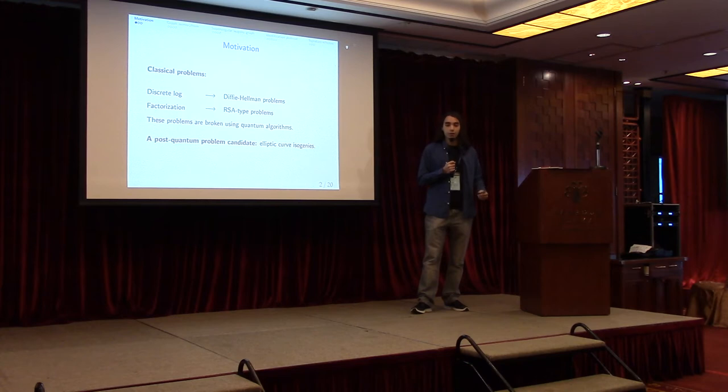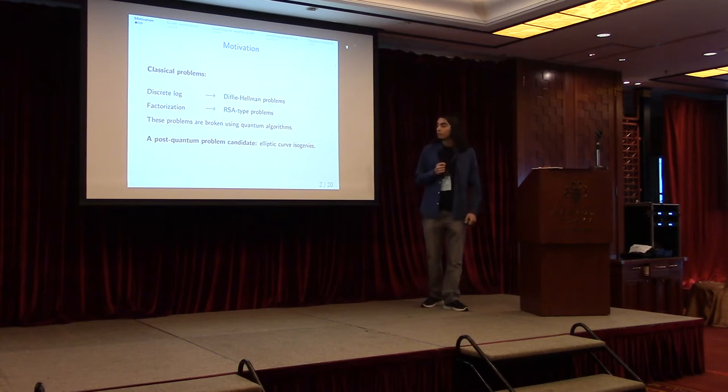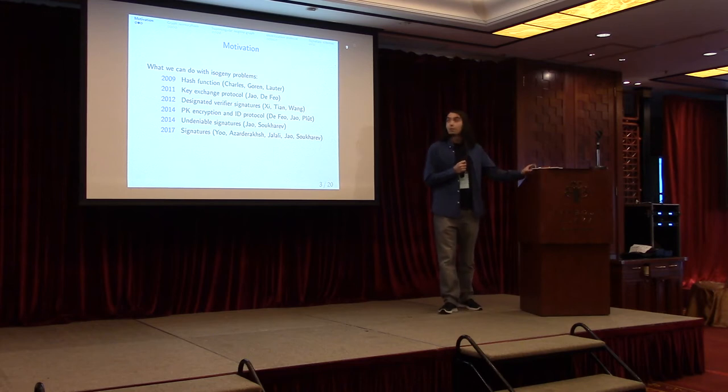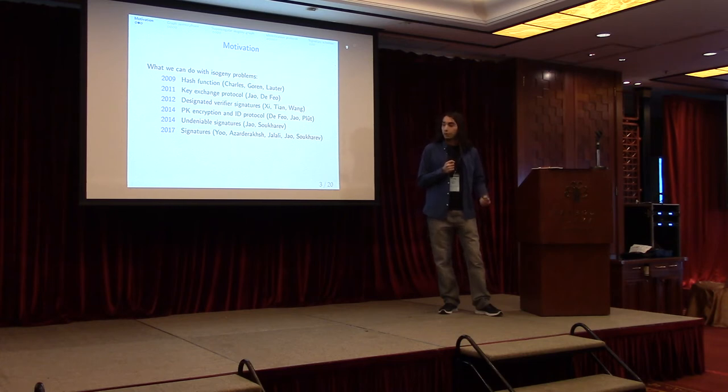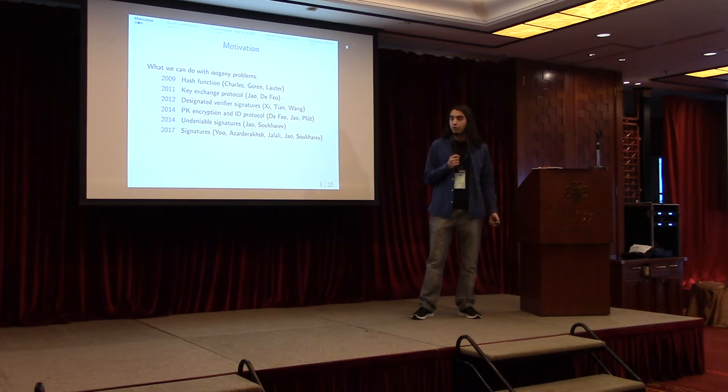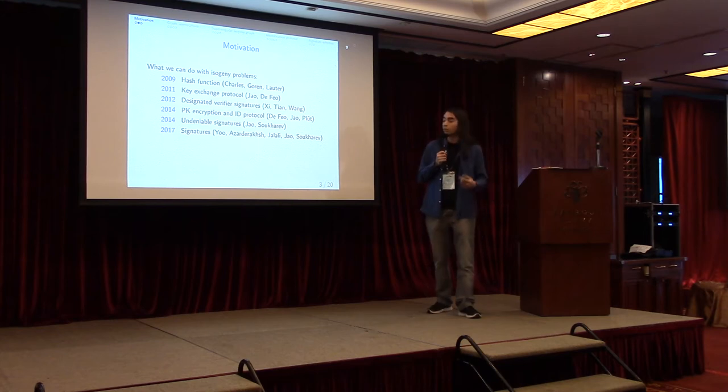One alternative, one of the minority alternatives, is the elliptic curve isogenies. So we will see what we can build with them. To give you a little bit of perspective, I want to recall what has been done in the isogeny based crypto in the recent years. So we have hash functions, key exchange protocols, designated verifier signatures, public key encryption, ID protocols, a number of signatures - a lot of stuff.